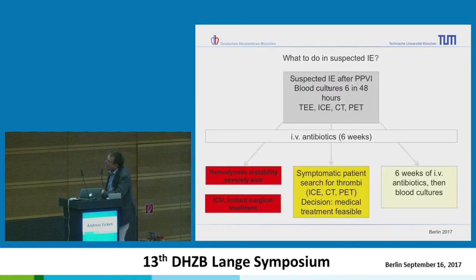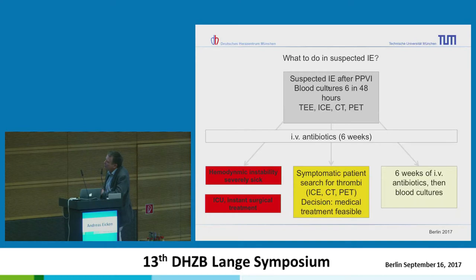If we suspect infectious endocarditis, we first assess if the patient is severely sick. If so, we must act instantly — the Paris NECARE group lost three patients within the first 24 hours. If the patient is hemodynamically stable and we can wait, we start collecting blood cultures — six in 48 hours — then decide on medical treatment or surgery.